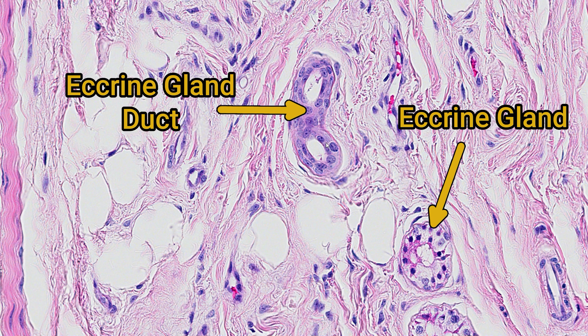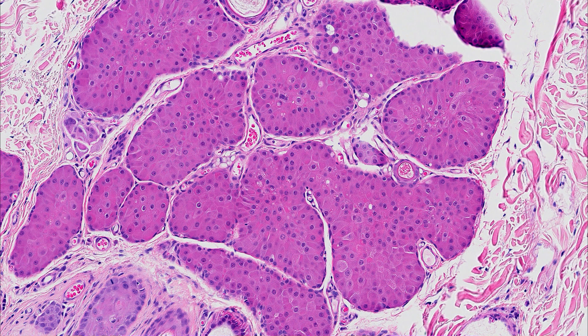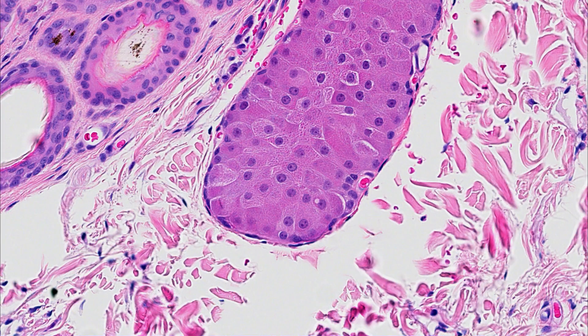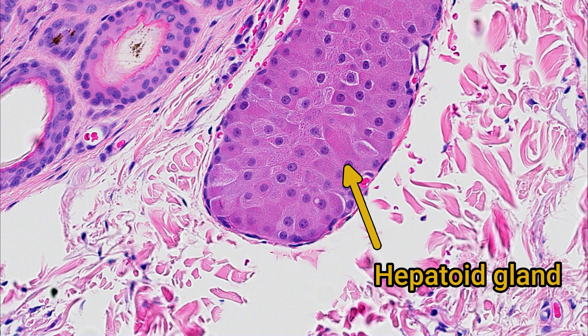Humans have an exceptionally high density of eccrine glands throughout the skin, as we are a very sweaty species. There are a few other types of glands found in different anatomic locations. First, there are the modified sebaceous glands present around the tail and anus of dogs — the hepatoid glands — so-called because their abundant pink cytoplasm makes them look a lot like hepatocytes.